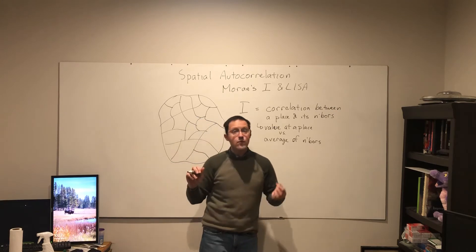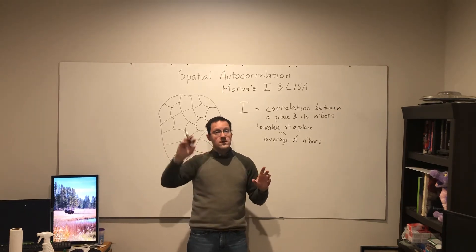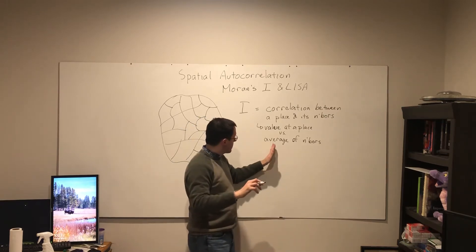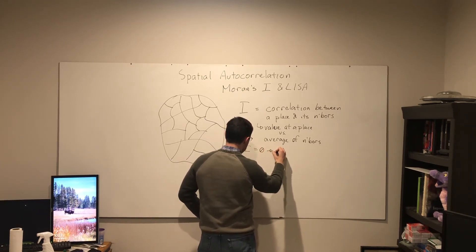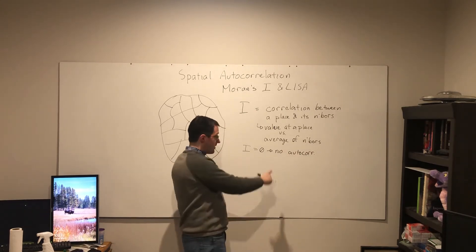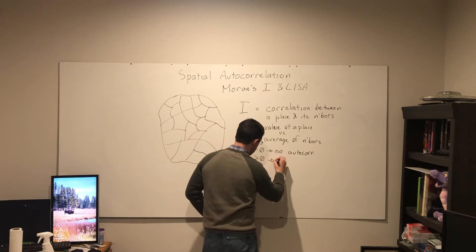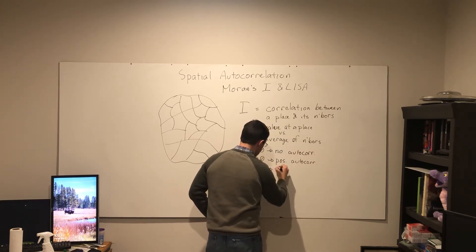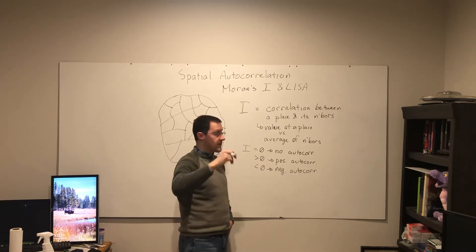This is typically presented with a scatterplot. We can then see here are the places — some are high, some are low — and their neighbors are high or their neighbors are low. If that value is zero or near zero, there's no autocorrelation. If it is positive, there's positive autocorrelation. If it's negative, there's negative autocorrelation.